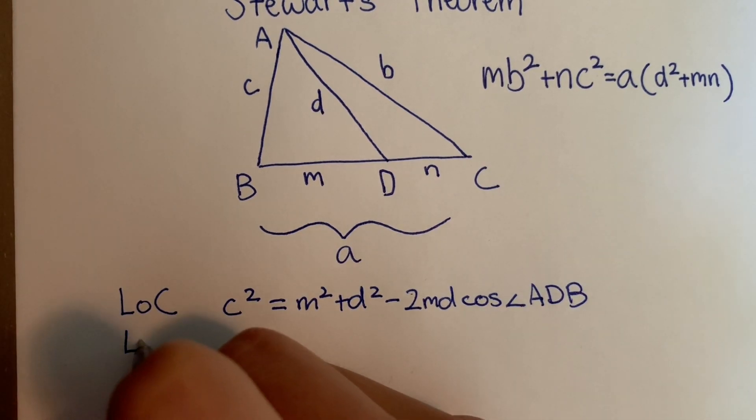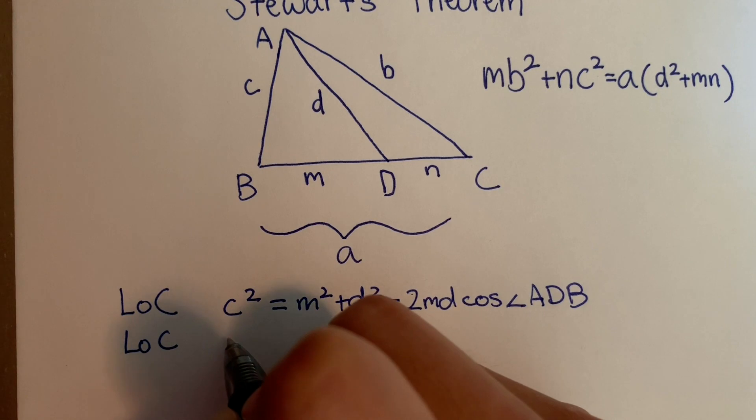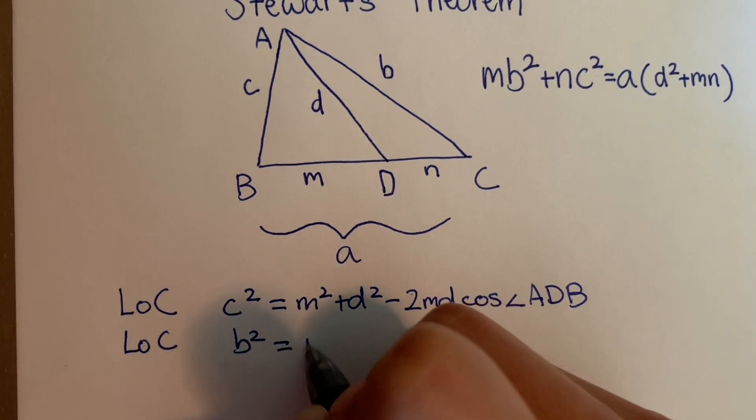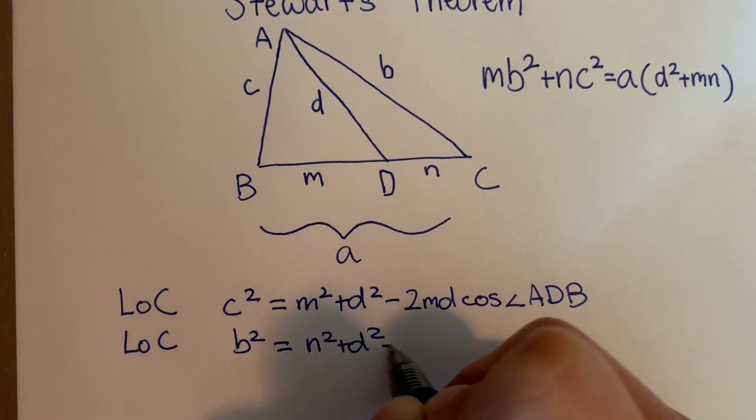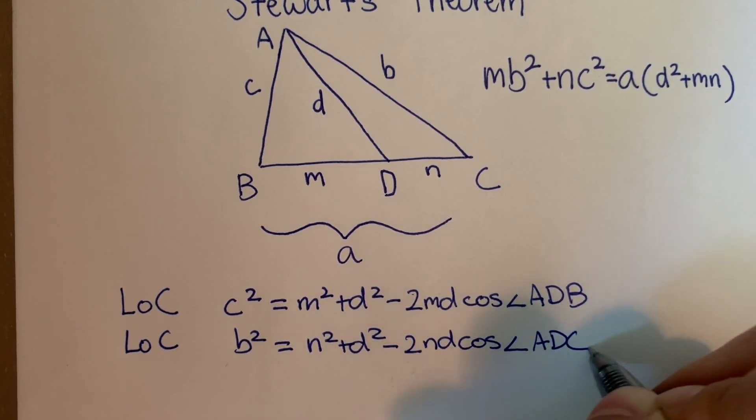Now using the law of cosines in triangle ADC, we have B squared equals N squared plus D squared minus 2ND cosine angle ADC.